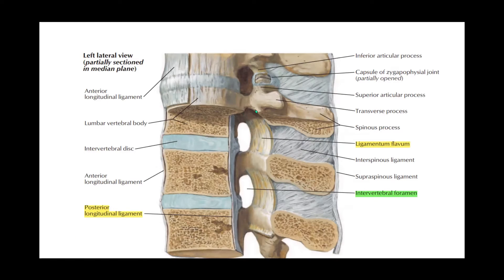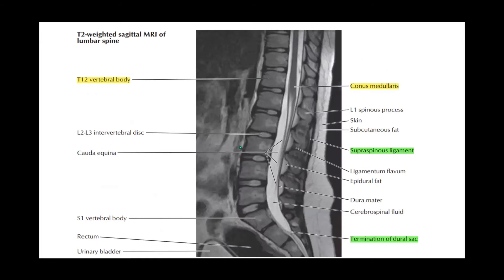These are the vertebral bones, and you can see the vertebral canal running all through. The vertebral canal is that space that lies between the posterior longitudinal ligament of the vertebral body and the ligamentum flavum — and when you put all those spaces together, it gives you the vertebral canal.